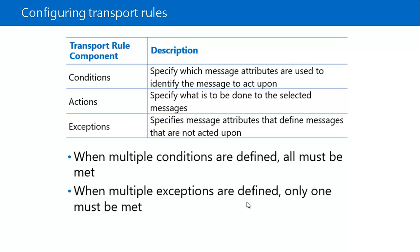Exceptions determine which email messages to exclude from an action. Transport rule exceptions override conditions and prevent Exchange Server from applying a transport rule action to an email message, even if the message matches all configured transport rule conditions. You can configure multiple exceptions on a transport rule to expand the criteria for which Exchange Server should not apply a transport rule.